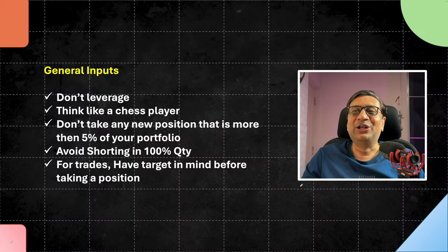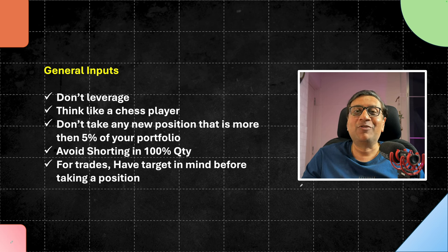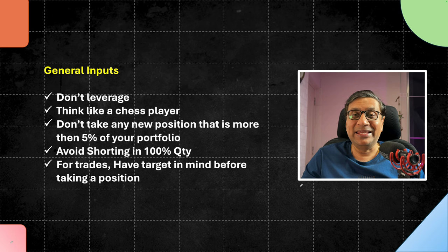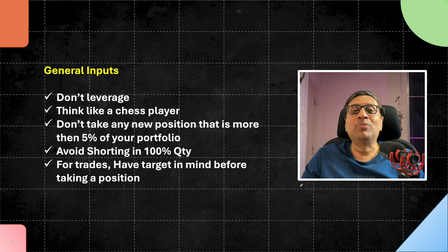Some general inputs for the next 5 days: Don't leverage. Don't spend the May salary you would get on 1st of June. Think like a chess player about what the other person is going to do — you are fighting large bots and large investors with thousands of crores of rupees. They may cause large spikes in the market which can break the backs of retail traders. People like you and me don't stand a chance against them. Whenever you are banking on an event and testing a theory that could go wrong, don't put more than 5% of your portfolio in those trades.